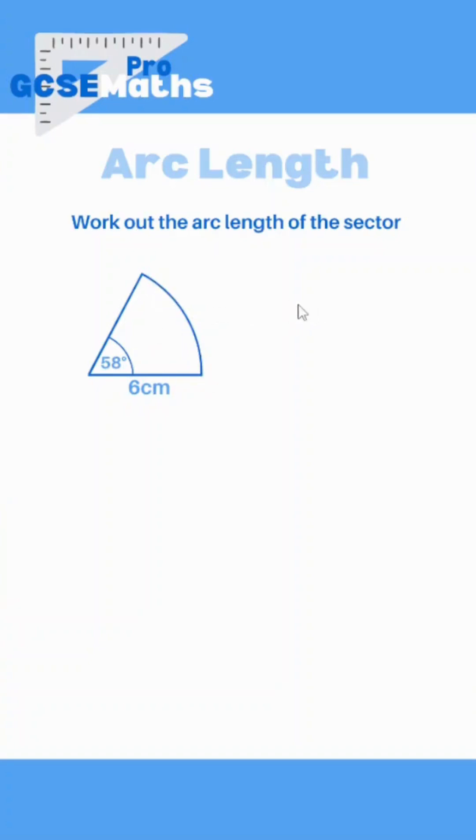So we're going to need to use our formula which you should have memorized. Because it's the arc length, it's related to the circumference, isn't it? So you might use pi times diameter, you might use 2pi r, whichever you prefer. I like to use pi times diameter.